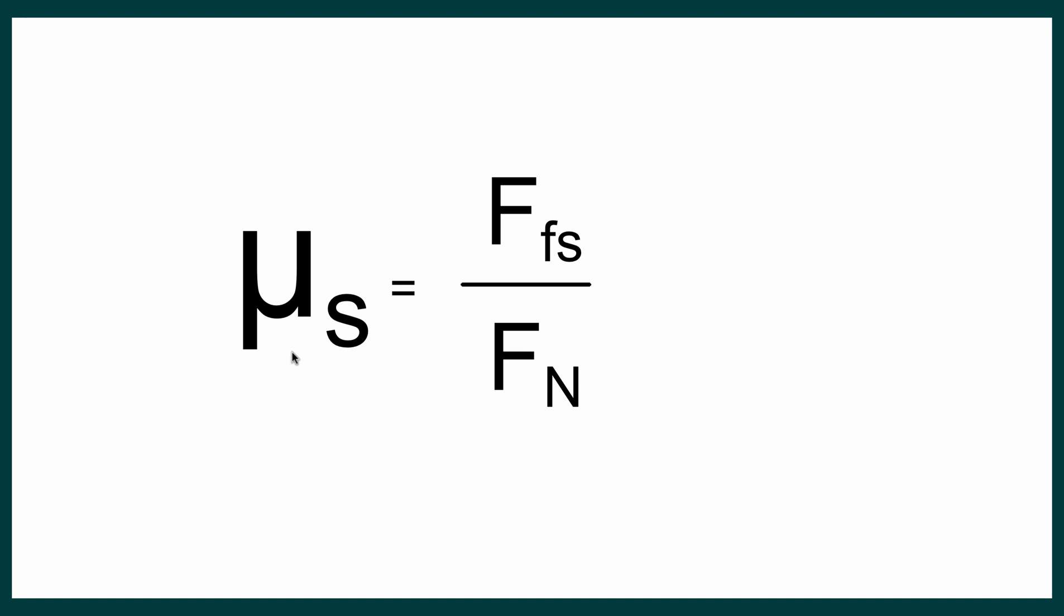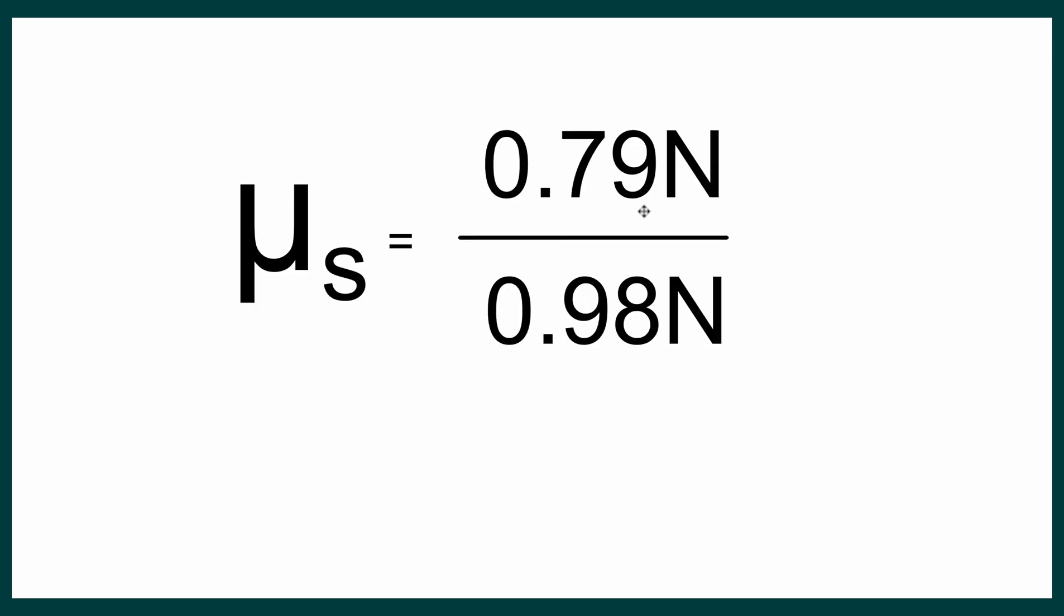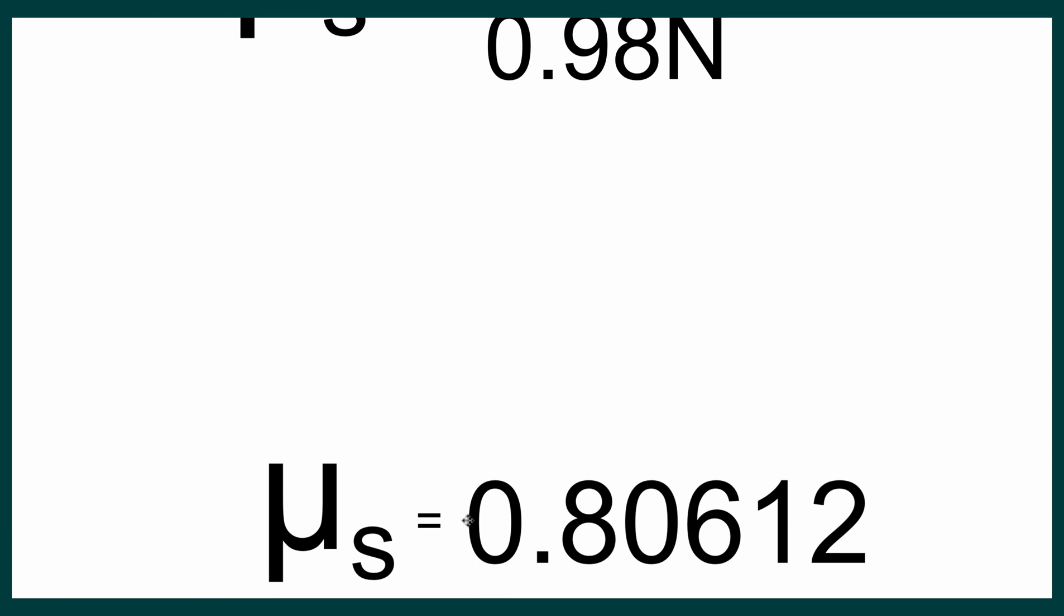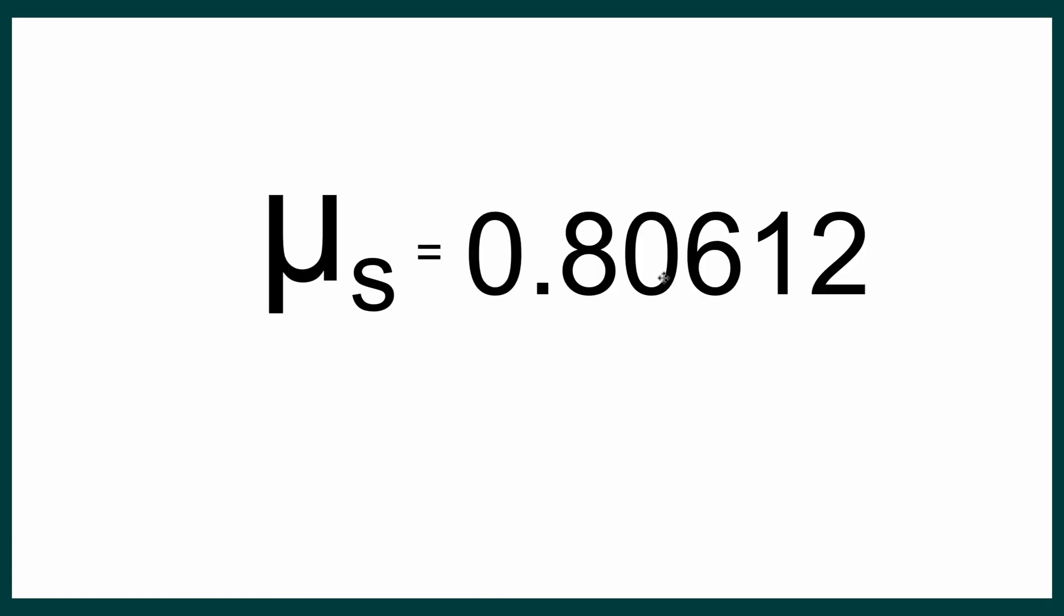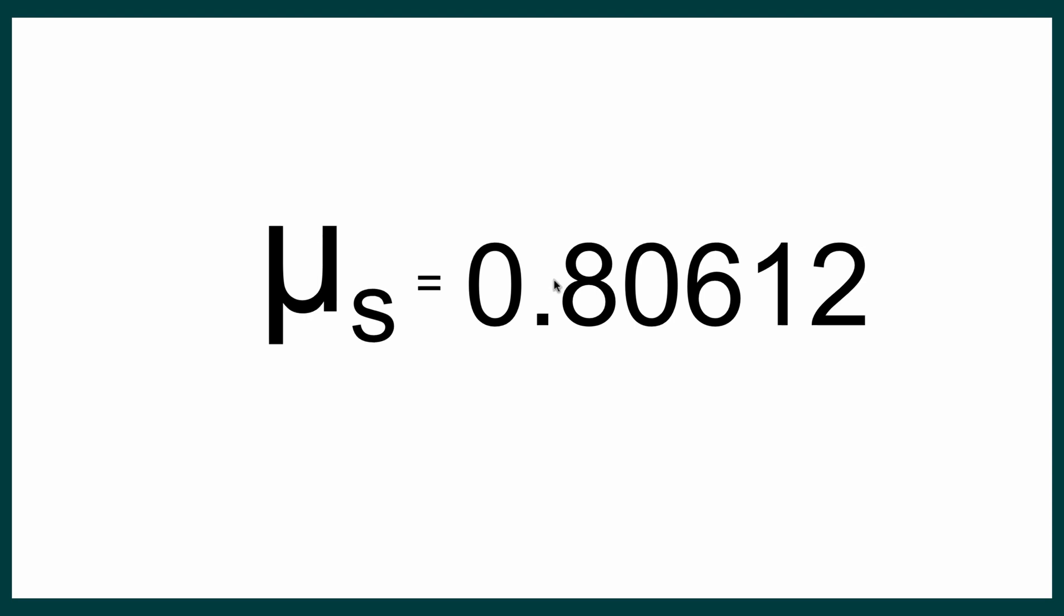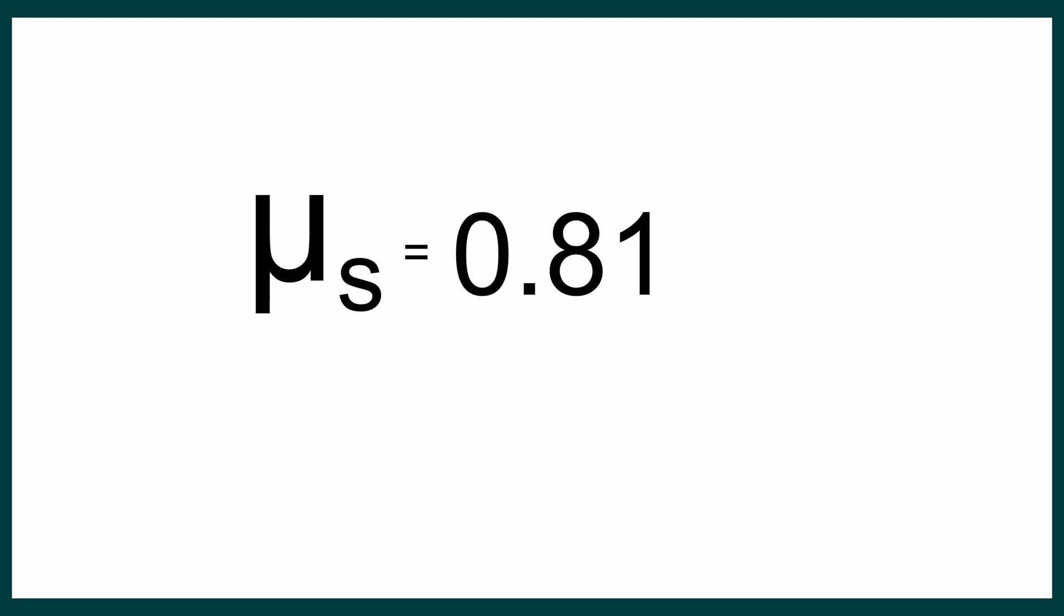When we go to calculate mu static, it's static friction force divided by normal, which we can get right off of our free body diagram. So we have a static friction force of 0.79 Newtons. The normal force was 0.98, which gives us 0.80612. And because we had Newtons over Newtons, the units cancel off. But since our experiment only gave us two significant digits, we will have to round this final answer to two significant digits, which would give us a mu static of 0.81.